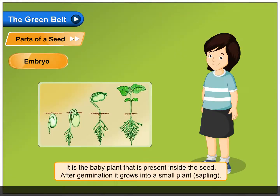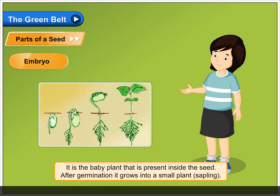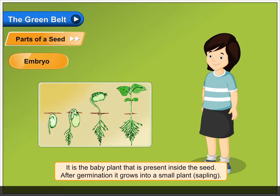Embryo: it is the baby plant that is present inside the seed. After germination, it grows into a small plant, called a sapling.